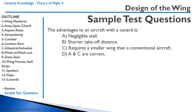The advantages of an aircraft with a canard are: A) a negligible stall — correct, because the canard stalls first; B) shorter takeoff distance — incorrect, we know it's longer; C) requires a smaller wing than a conventional aircraft — in a conventional configuration the horizontal stabilizer provides a downward force, reducing net lift, whereas the canard provides lift at the front. So for the same total lift, you can get away with a smaller main wing using a canard. Both A and C are correct, making D the correct answer.